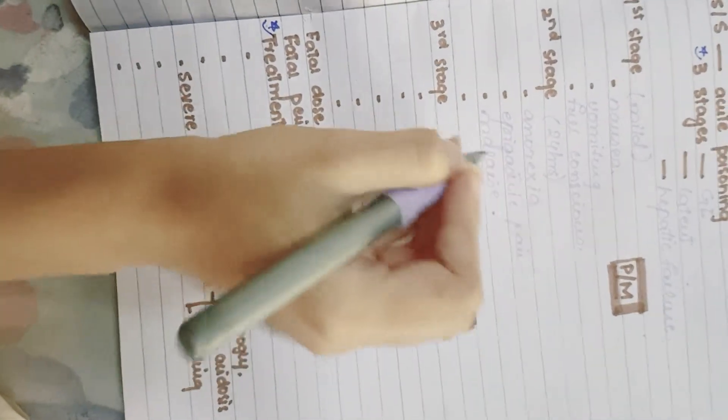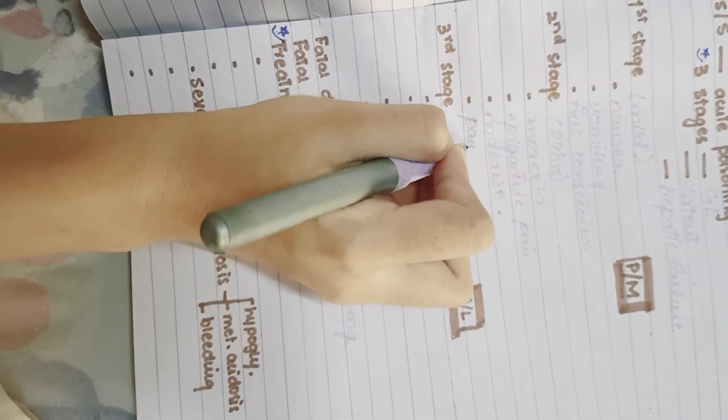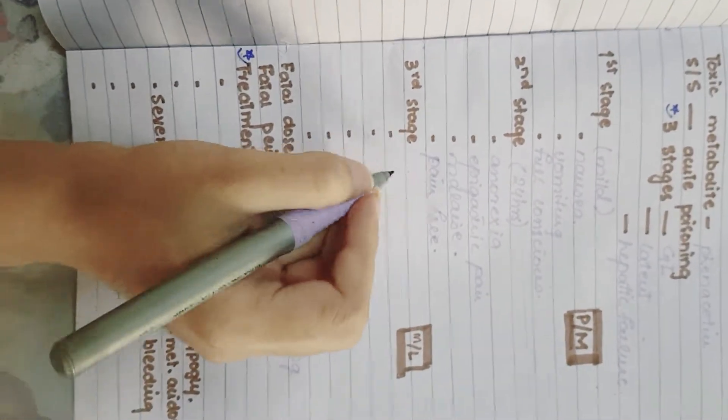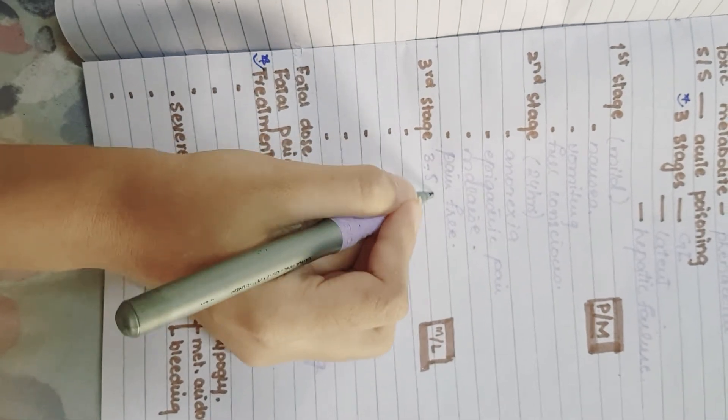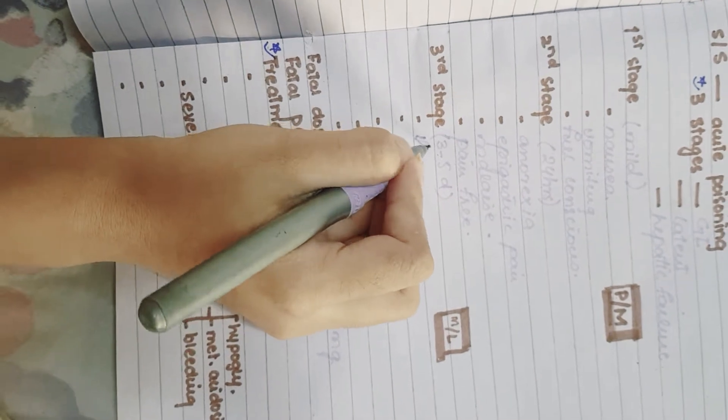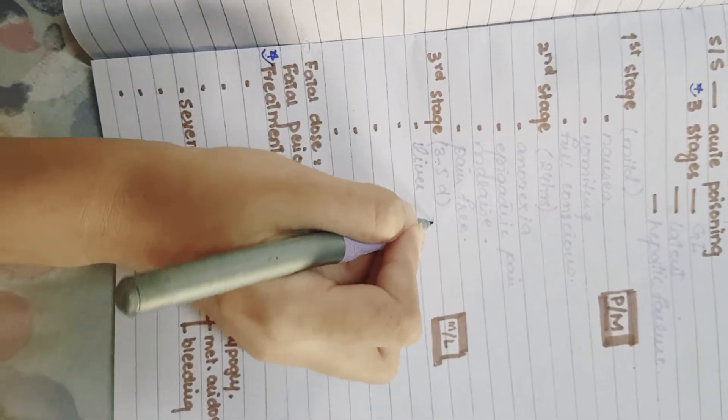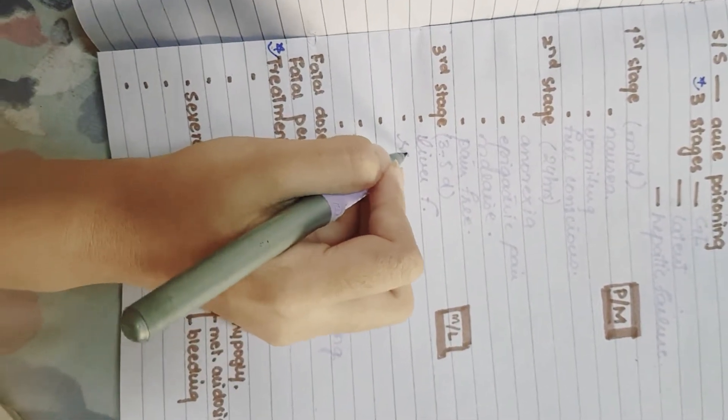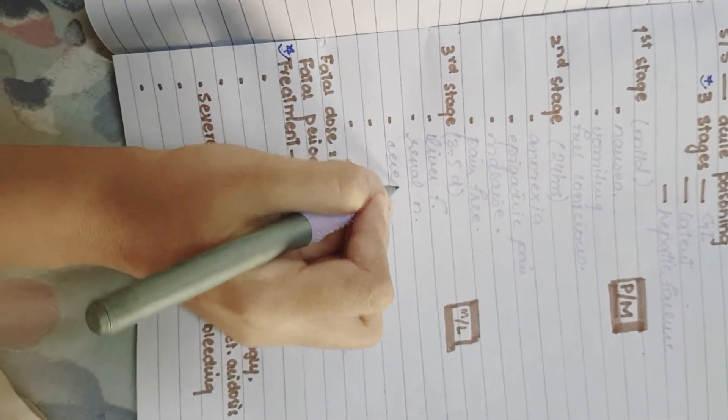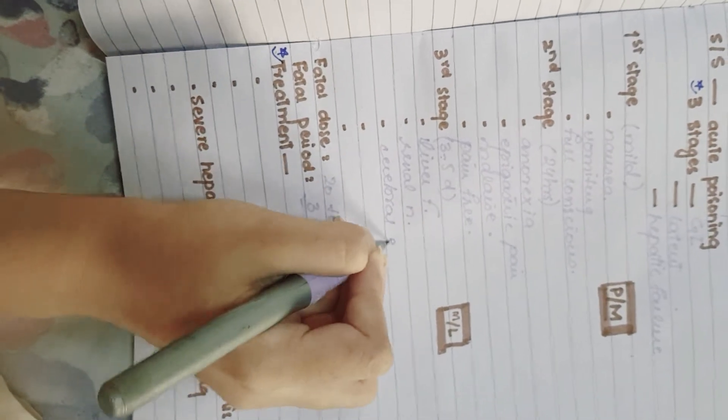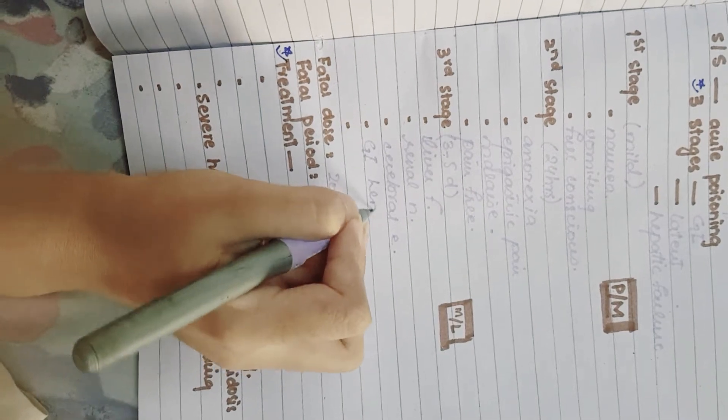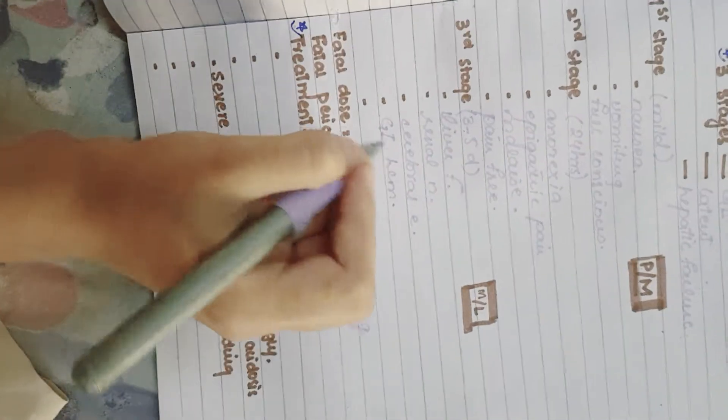But the patient still is a little bit pain-free. The third stage starts after about three to five days. The symptoms would include liver failure, renal necrosis, cerebral edema, GIT hemorrhage, and cardiomyopathy. As you see, there are different organs involved.